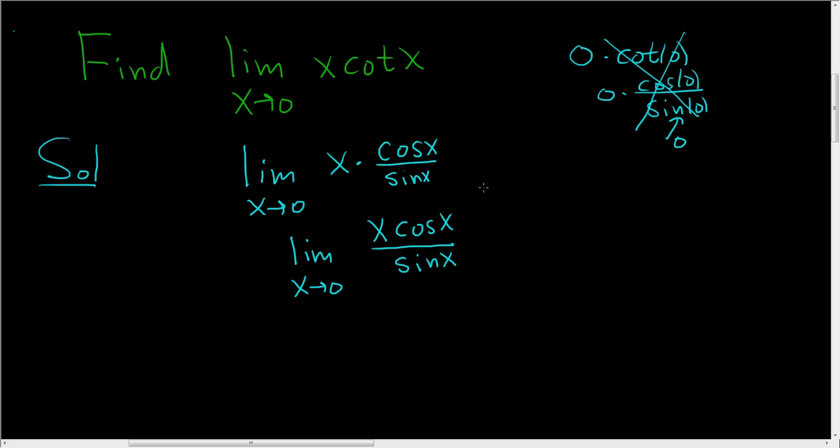The reason is if you plug in 0 in the numerator, you get 0 because 0 times cosine 0 is 0. 0 times any number is 0. And in the denominator, you also get 0 because the sine of 0 is 0. So now let's use L'Hopital's.